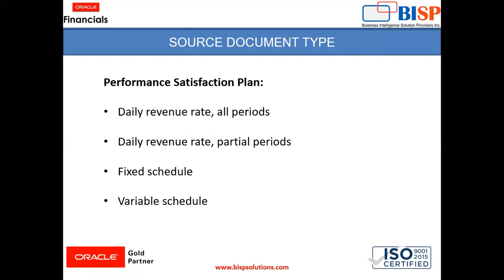There are four types of performance satisfaction plan. First, daily revenue rate all period — this means recognition of revenue on a daily basis, and you need to specify the start and end date of the period. Second, daily revenue rate partial period — used when revenue needs to be recognized partially for a period, and you also need to give start and end date. Third, fixed schedule — it does not use days; instead it uses the accounting period, which can be a week, a month, or a quarter depending on the accounting calendar your organization uses.